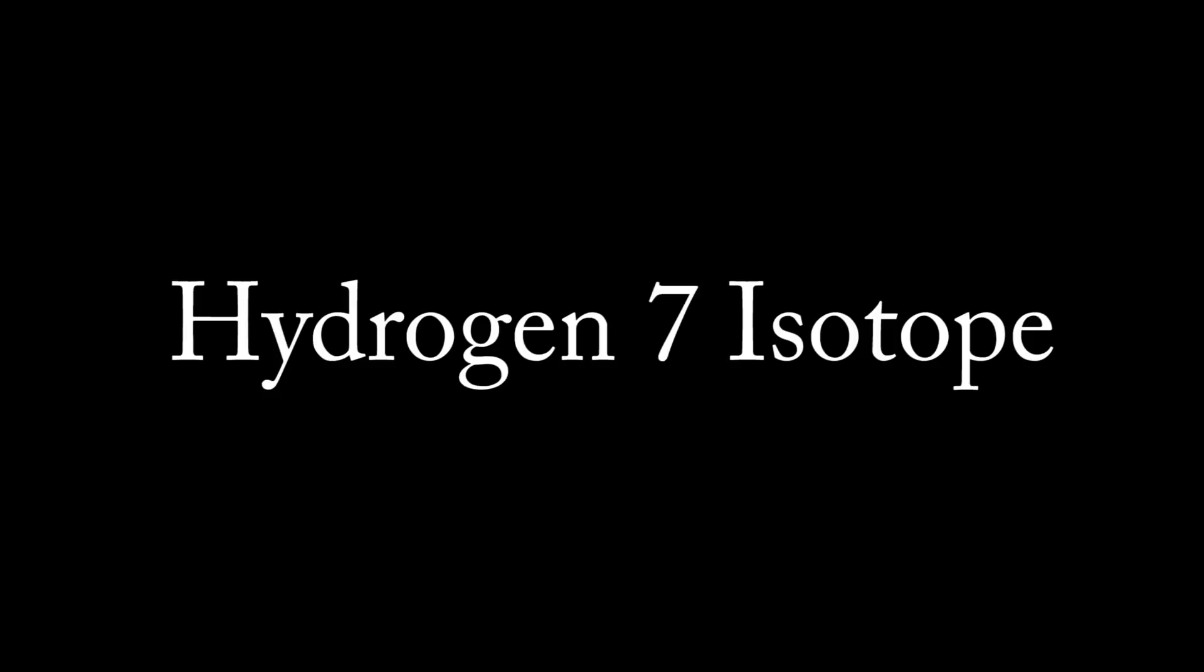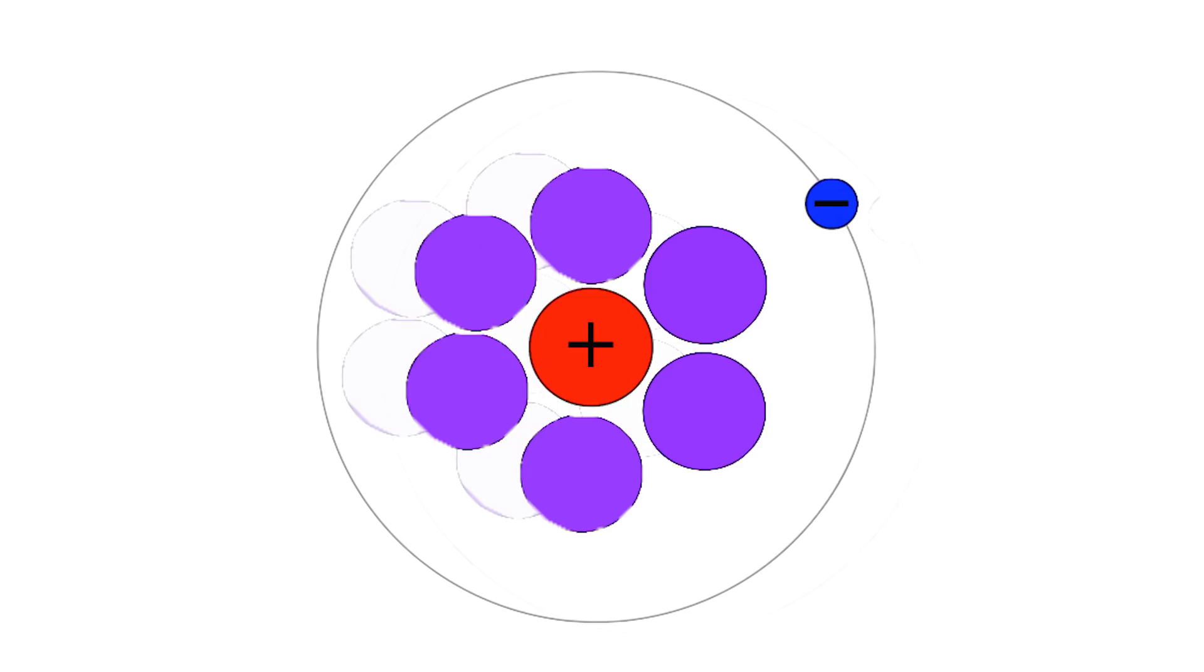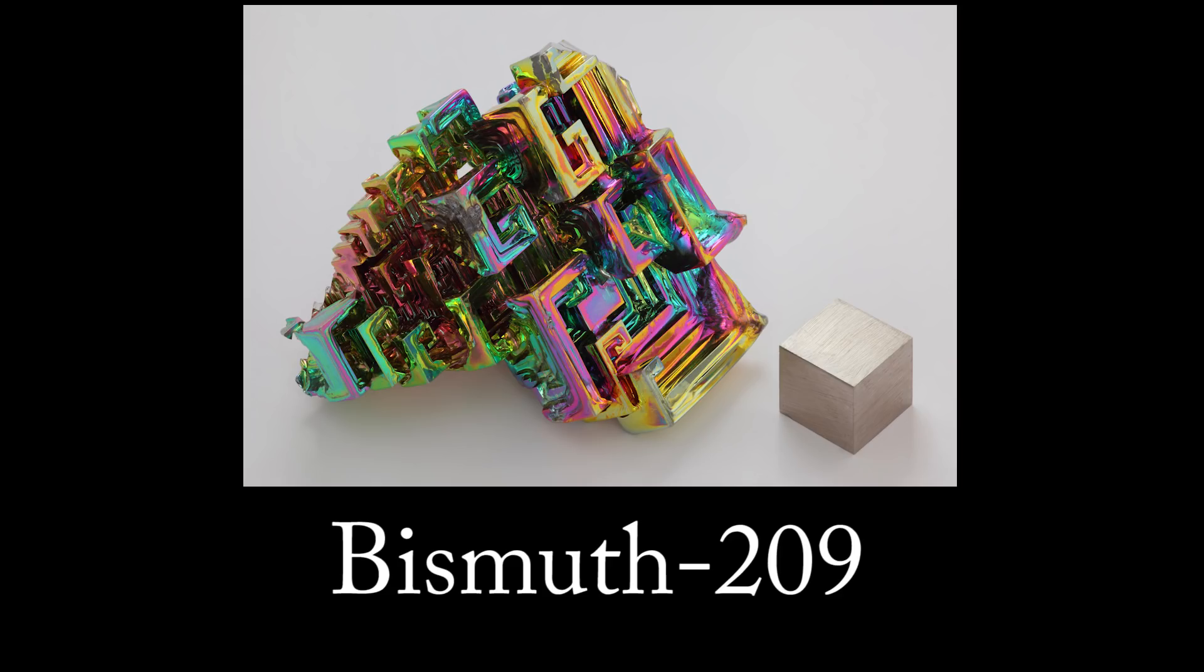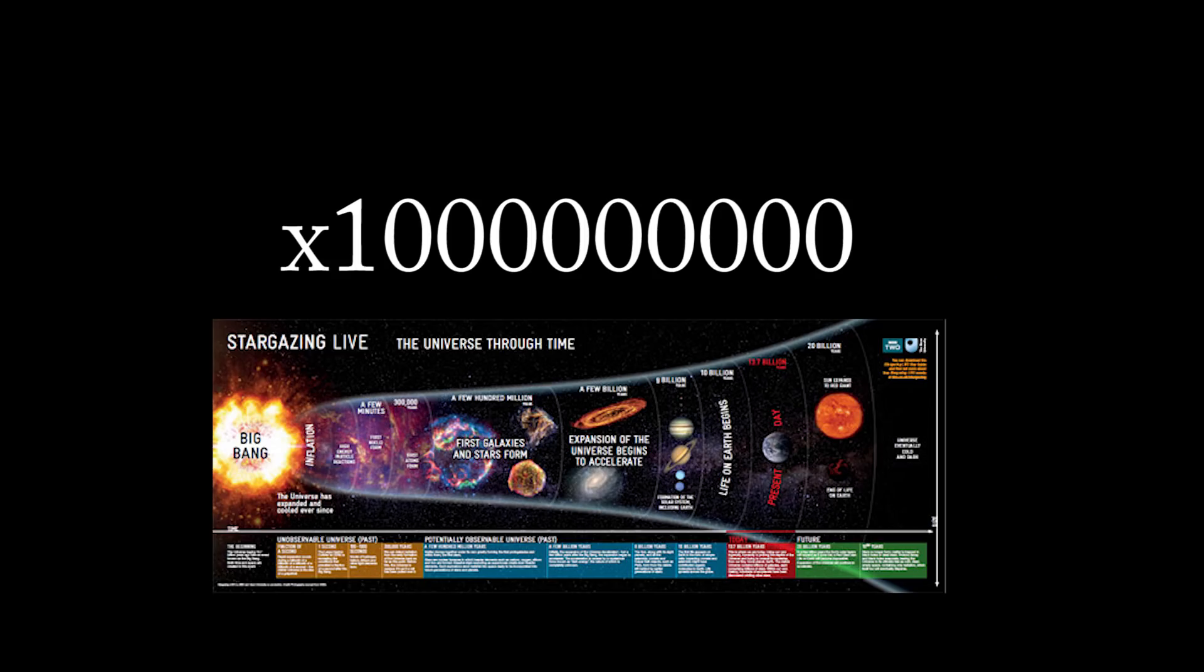Hydrogen 7 isotope, which is a hydrogen atom with 6 additional neutrons, has the smallest half-life of only 23 yoctoseconds. However, for the longest half-life record holder, we have bismuth 209 with a half-life that is over a billion times longer than the current estimate of the age of the universe.